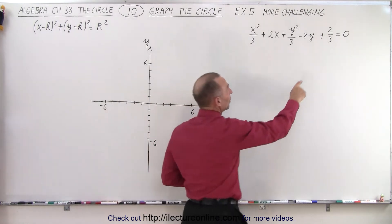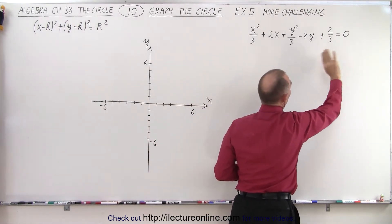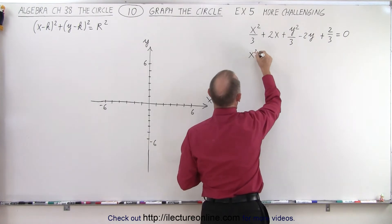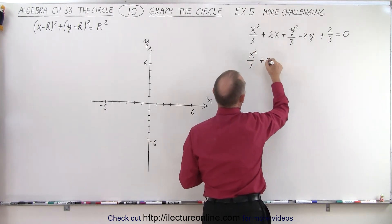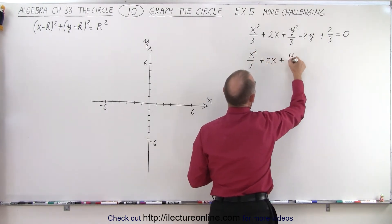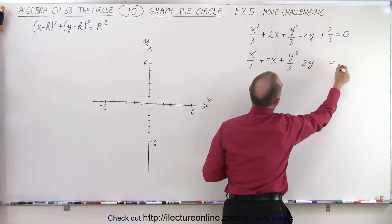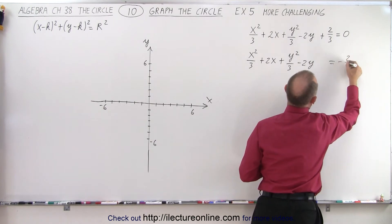We also have this constant over here, which we probably want to move to the right side. So let's start with doing that. So we end up with x squared divided by 3 plus 2x plus y squared divided by 3 minus 2y is equal to negative 2 thirds.